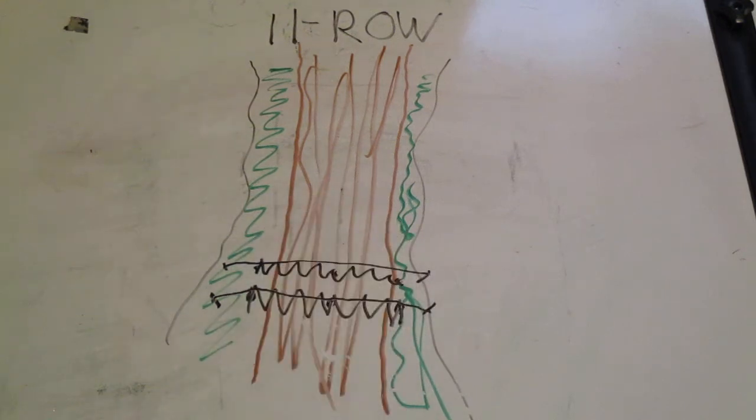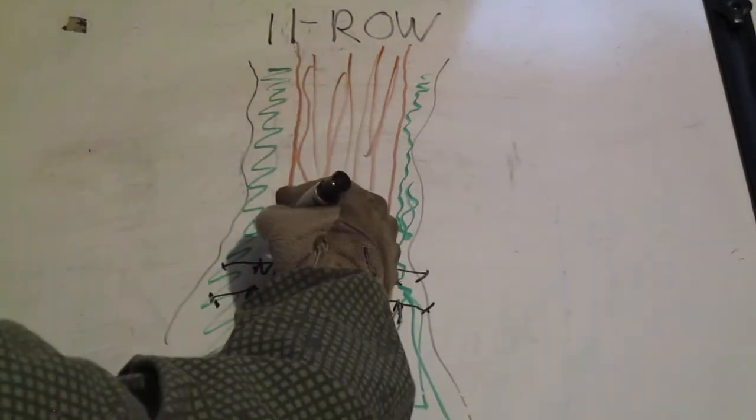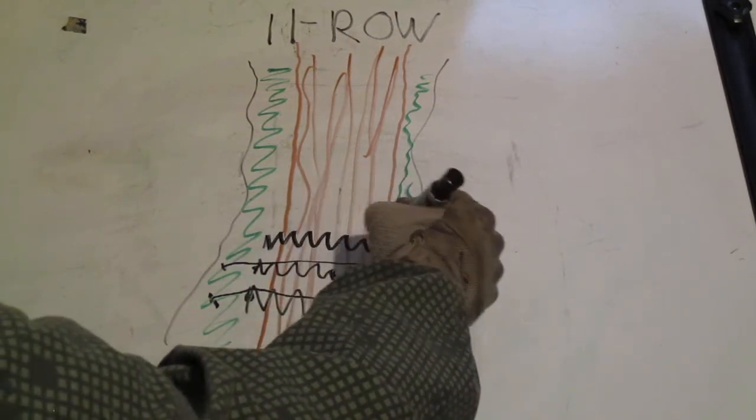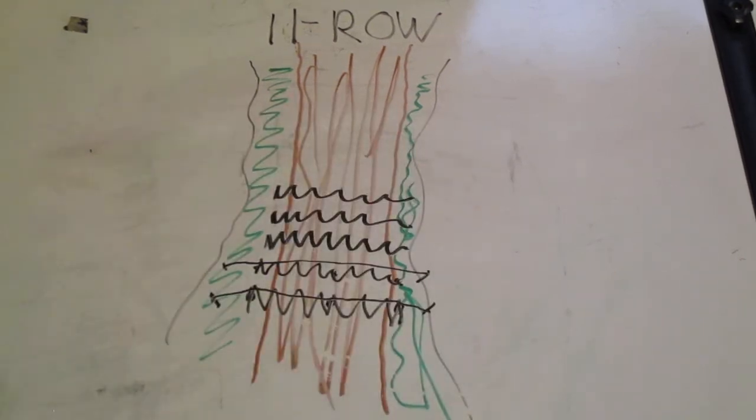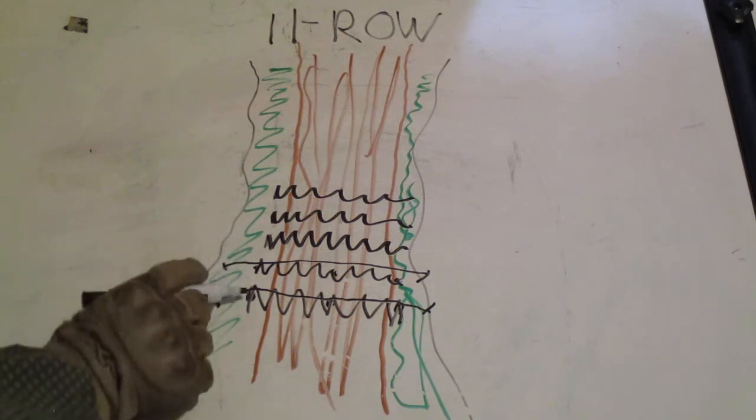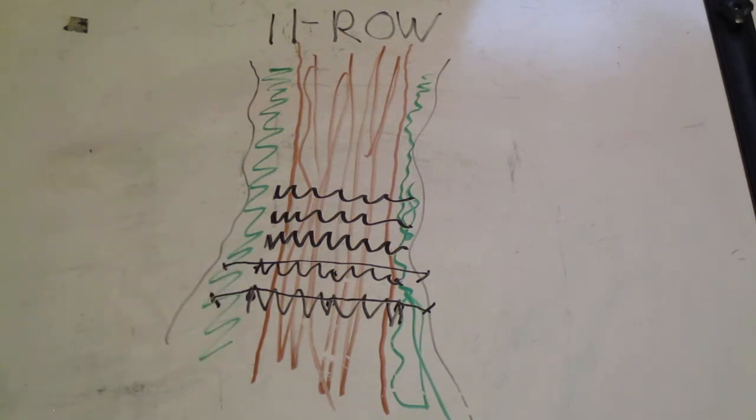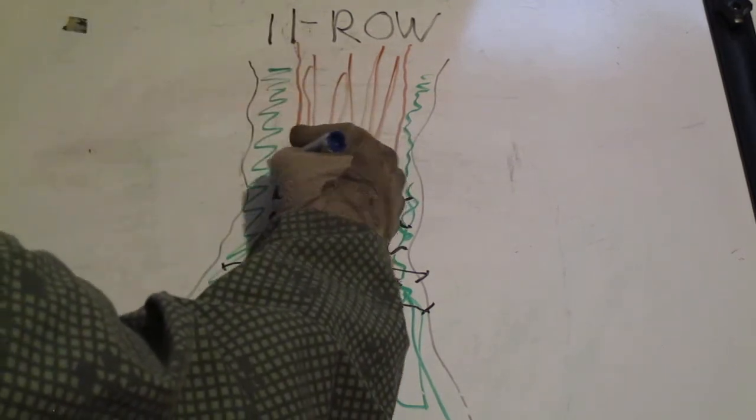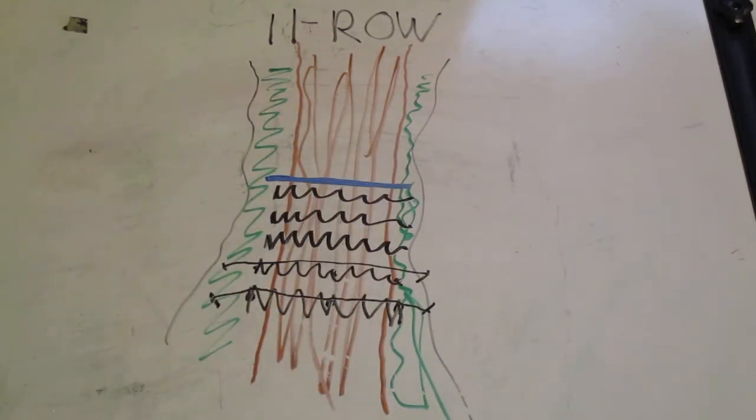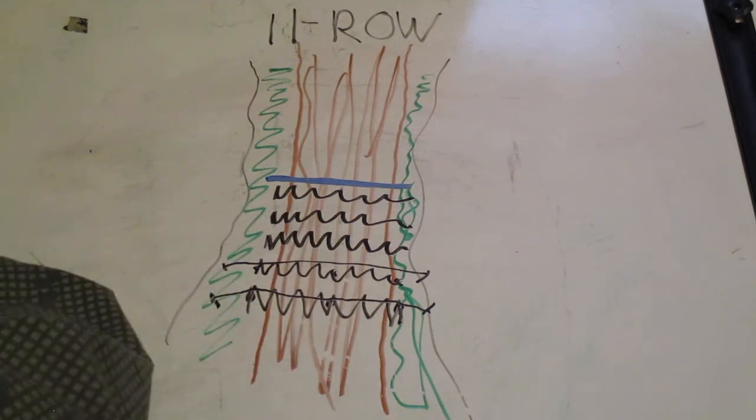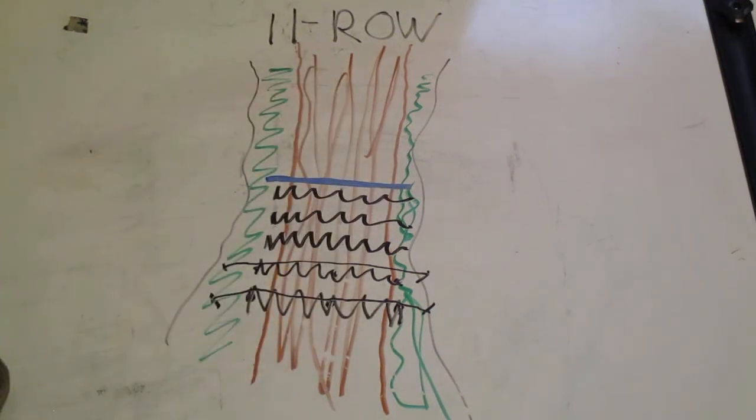When you get to your fifth row, these rows here are emplaced the exact same way that these are. When you get to your fifth row, that's when you're going to put your log in. You put your log in between the fifth and sixth row.